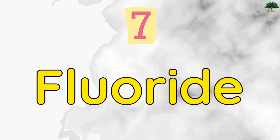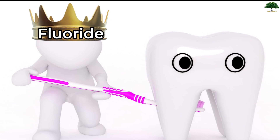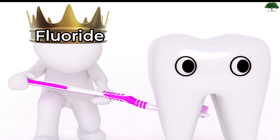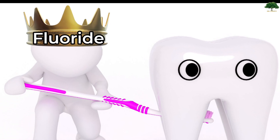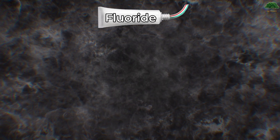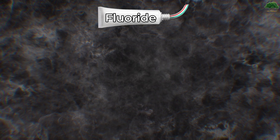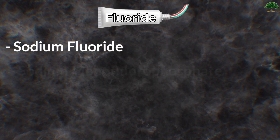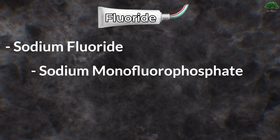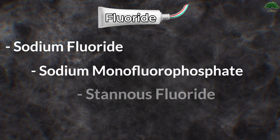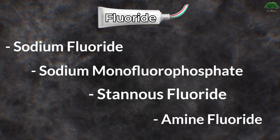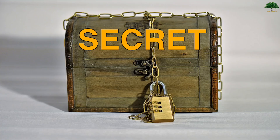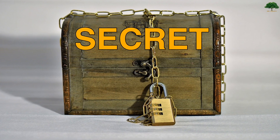And last but not least, Number 7: Fluoride. Fluoride دانتوں کو مضبوط بناتا ہے اور ان میں cavities ہونے سے بچاتا ہے۔ Fluoride کو toothpaste tube پر مندرجہ ذیل ناموں سے mention کیا جاتا ہے: sodium fluoride، sodium monofluorophosphate، stannous fluoride اور amine fluoride وغیرہ۔